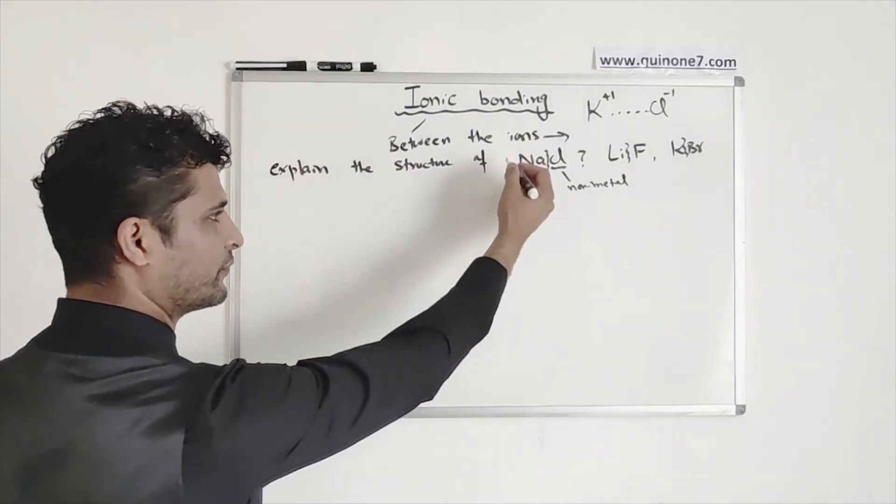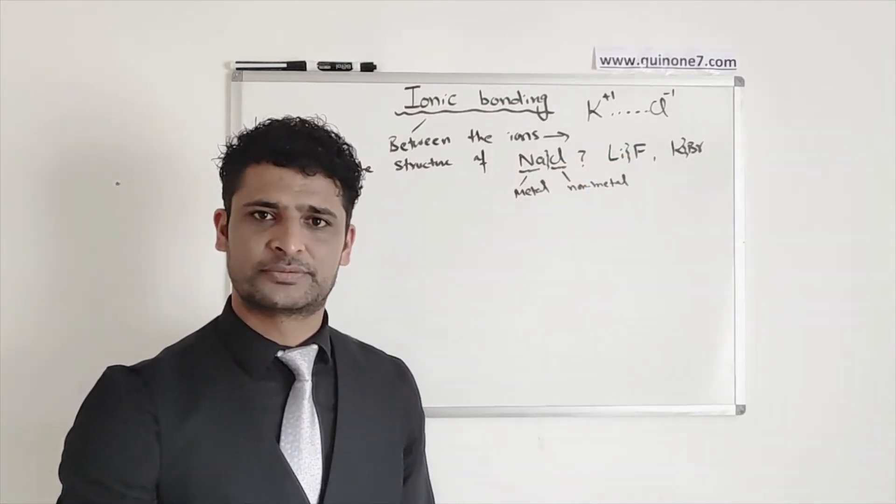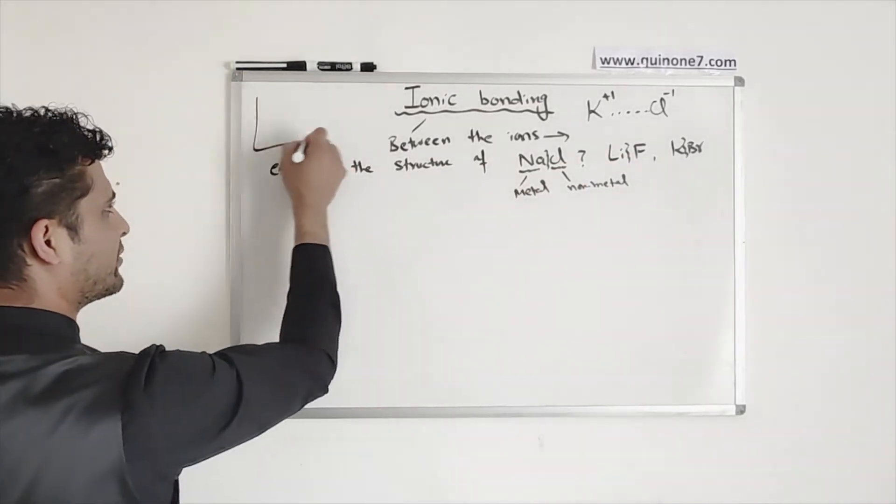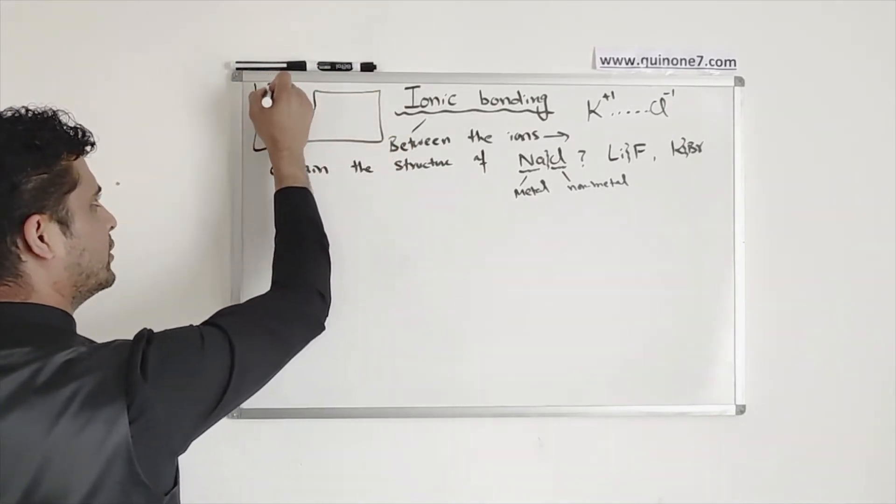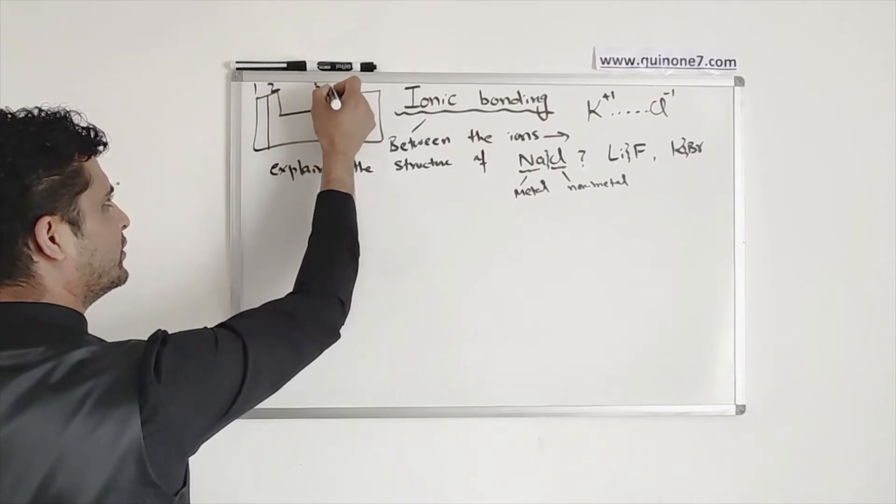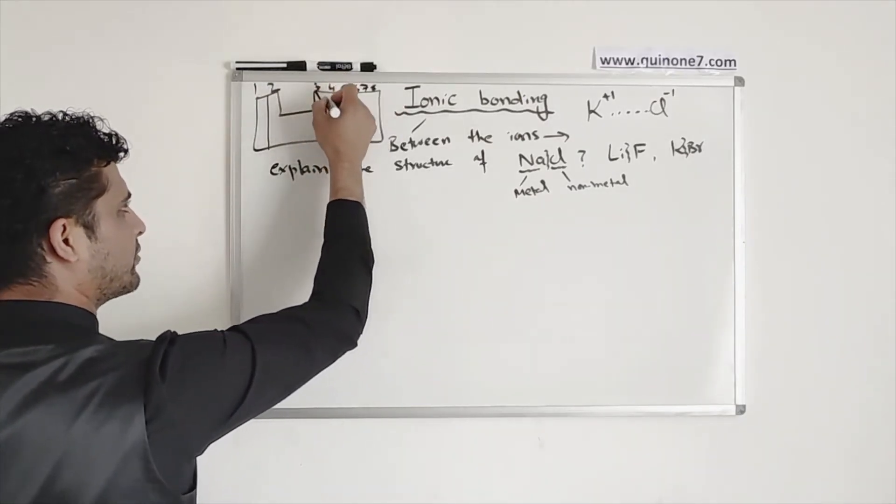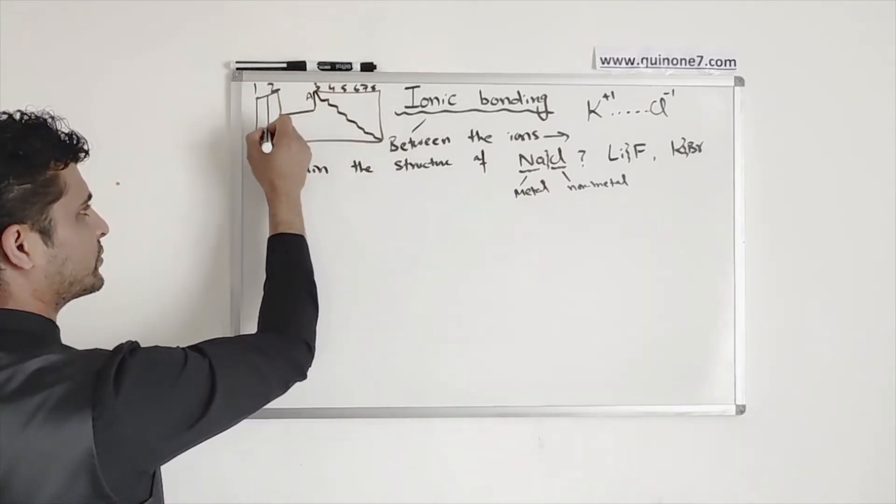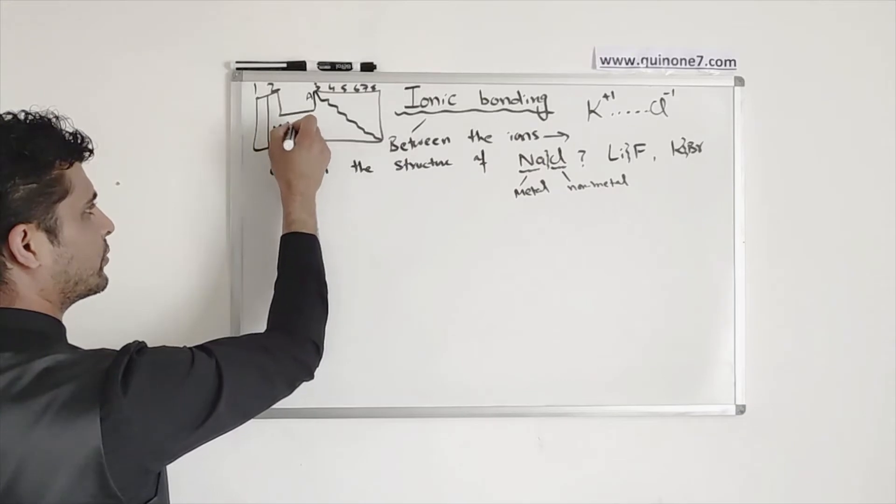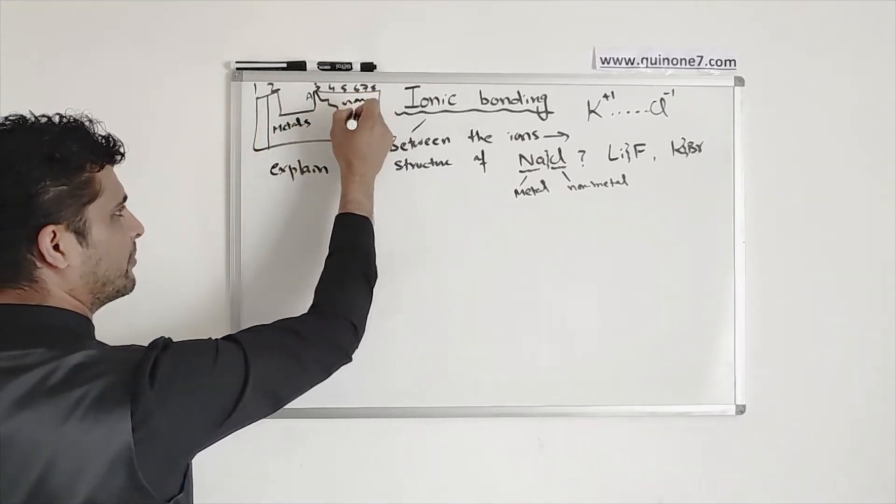When you look at the periodic table, if you want to find out which one is metal and which one is a non-metal, I'm just going to resolve this problem straight away for you. So if you look at the periodic table, you will have group 1, 2, then you have 3, 4, 5, 6, 7, 8. Somewhere there, up to aluminium, all of this group, including group 1, they all are metals. And this part, they are non-metals.